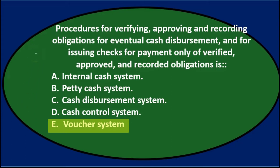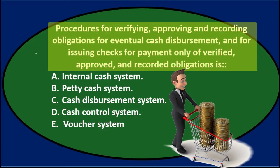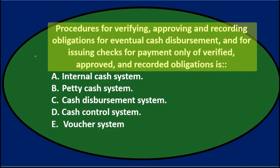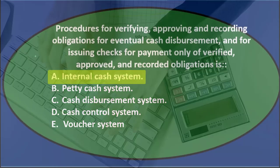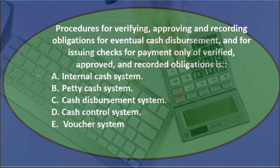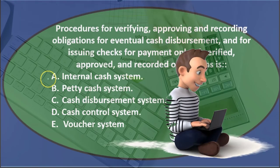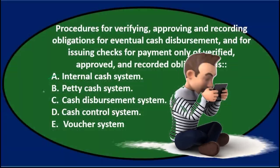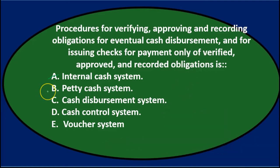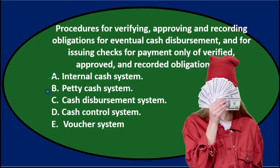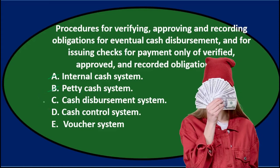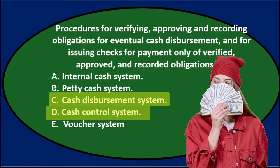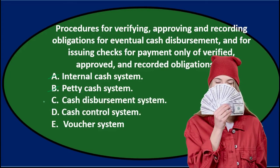Let's go through this one more time. A — internal cash system: if it said internal control type system that might be applicable, but internal cash system doesn't seem correct. B — petty cash system: this sounds like it deals with normal cash payments, not petty cash, which is really just used for minor cash payments, so probably not that. C — cash disbursement system: it kind of sounds like we are dispersing cash or paying for things, so we'll keep that for now.